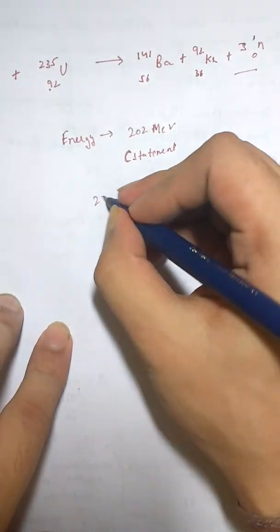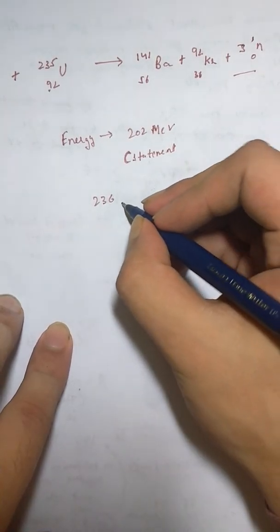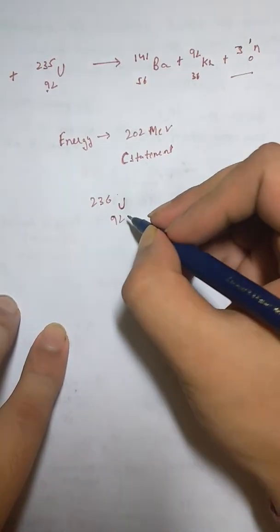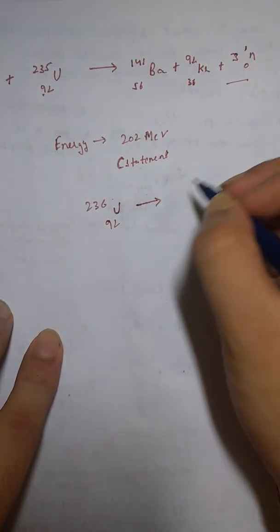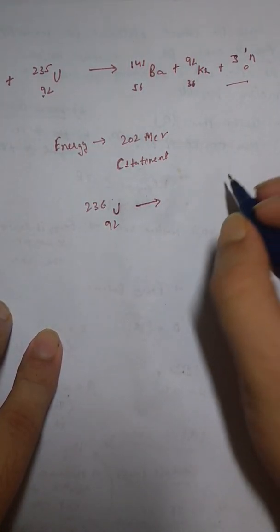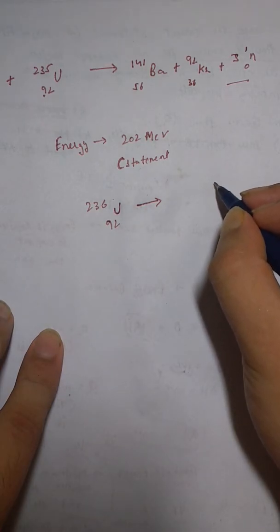This is U-235, it gains one neutron so it becomes 236. The daughter nuclei that should be formed should be symmetrical. What I mean by symmetrical is, for example, in this case if two neutrons are formed...